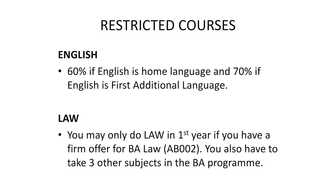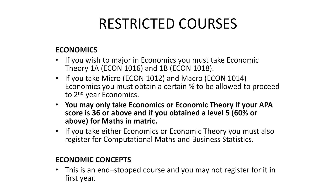You also have to take three other subjects in the BA. Should you decide to do Economics: if you wish to major in Economics, you must take Economic Theory 1A, which is ECON1016, and 1B, which is ECON1018. If you take Micro, which is ECON1012, and Macro, which is ECON1014, you must obtain a minimum requirement to proceed to second year. You may only take Economics or Economic Theory if your APS score is 36 or above and you obtain a Level 5, which is 60% or above, for Mathematics in Matric. If you take either Economics or Economic Theory, you must also register for Computational Maths and Business Statistics.